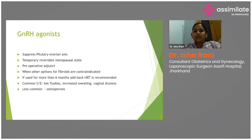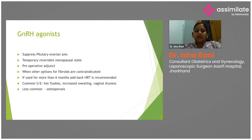GnRH agonists suppress the pituitary-ovarian axis, creating a temporary reversible menopausal state. They are also used as preoperative adjuncts for large fibroids or severe anemia, giving time to build hemoglobin before surgery. If GnRH agonists are used for more than six months, add-back HRT therapy must be added. Common side effects are hot flashes, vaginal dryness, and less commonly osteoporosis.